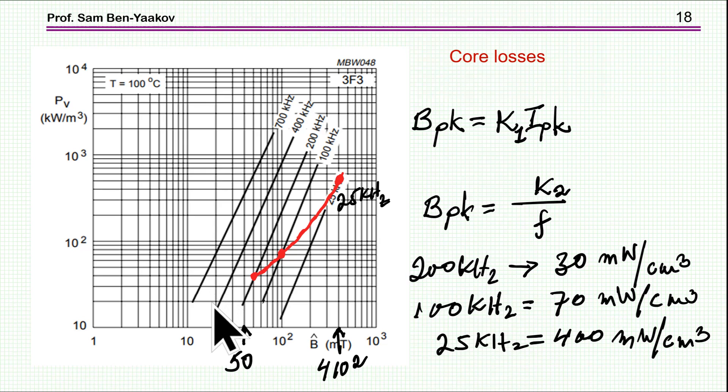So here I'm showing, say this is like a reference point, 100 millitesla, and the loss would be something like 70 milliwatts per centimeter cube. That's here.